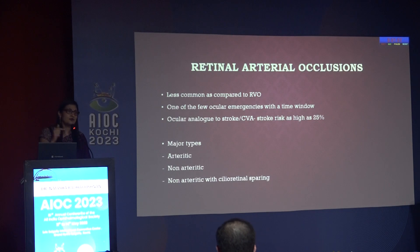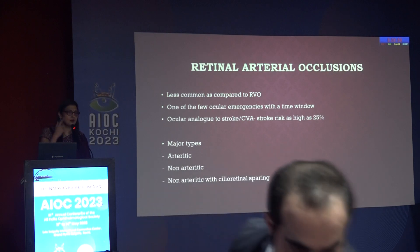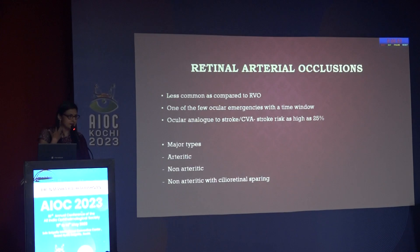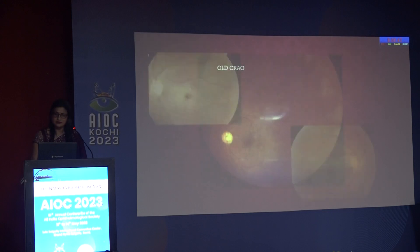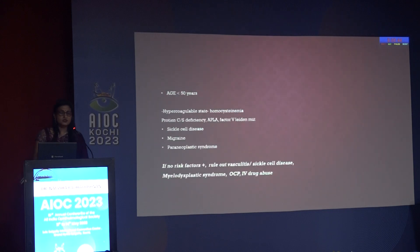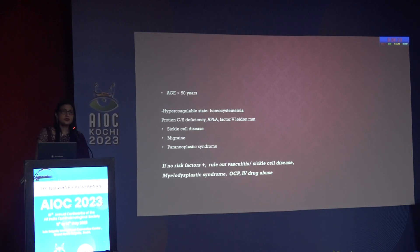The two important investigations are: echocardiography to look for calcification, vegetations on valves, mural thrombus; and a full cardiology evaluation plus carotid Doppler to look for thrombus in the carotid arteries, which is the next most common cause. For treatment, you can quickly do ocular massage — increasing then reducing intraocular pressure to dislodge the clot — or perform a paracentesis in OPD or OT to suddenly reduce IOP, allowing blood to gush through and remove the embolus from the central retinal artery.